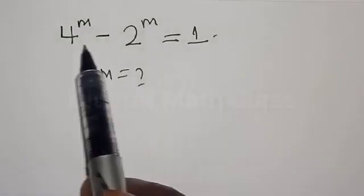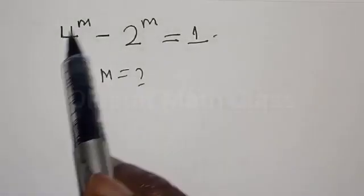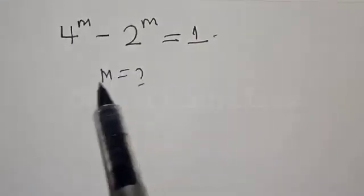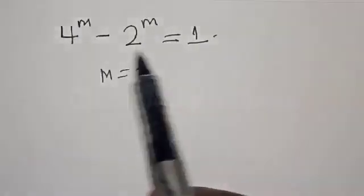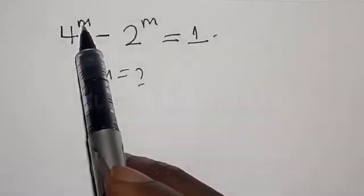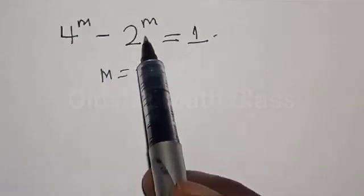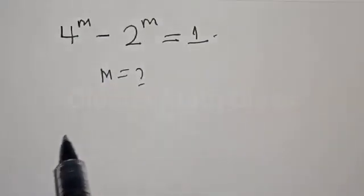Welcome to my class, the Olusta class. In today's class, we want to look at how we can quickly find the value of m from this given equation: 4 raised to power m minus 2 raised to power m is equal to 1.